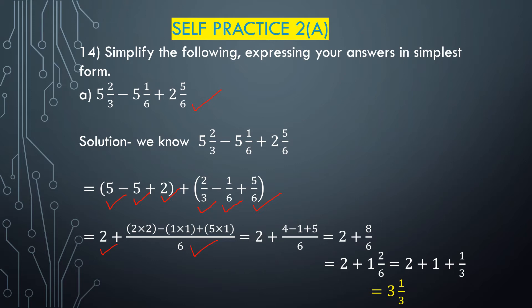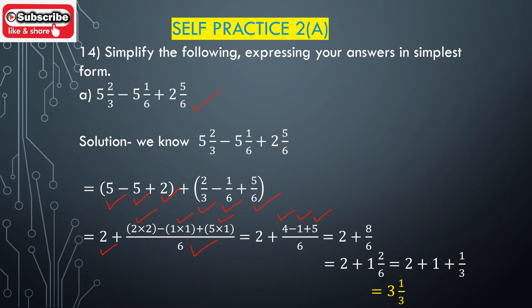Divide the LCM 6 by the denominator of 2/3: 6 divided by 3 is 2, then multiply 2 with the numerator 2, giving 2 multiplied by 2. For 1/6: 6 divided by 6 is 1, then 1 multiplied by 1. For 5/6: 1 multiplied by 5. So we get 4 minus 1 plus 5, all divided by 6, which is the LCM as denominator. 4 minus 1 is 3, and 3 plus 5 is 8, giving 8/6.